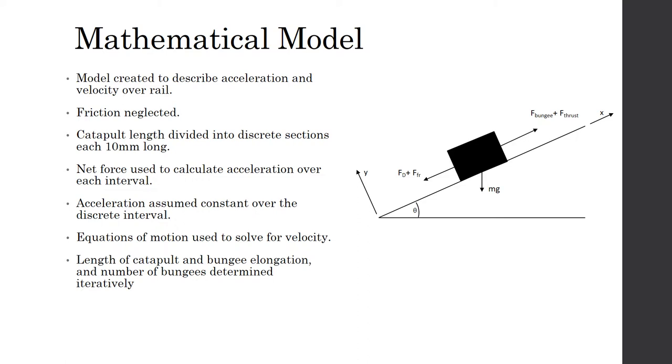The length of catapult, the bungee elongation, as well as the number of bungees can be entered as parameters into the model. By changing these iteratively, one can arrive at the value of these parameters for which the values for the velocity and acceleration will meet the specifications.